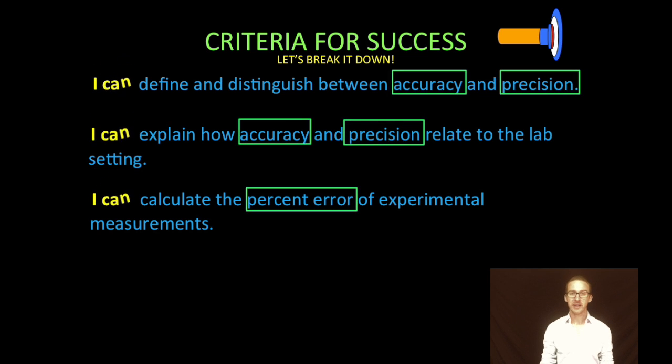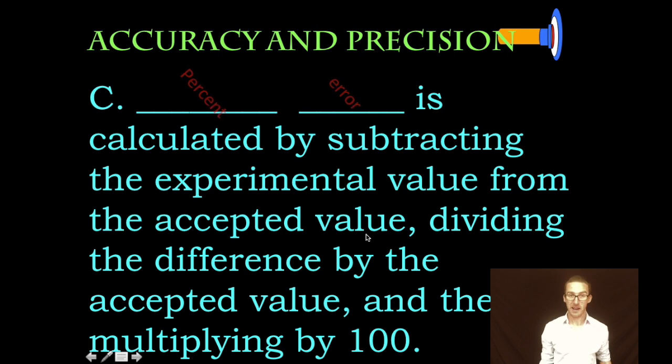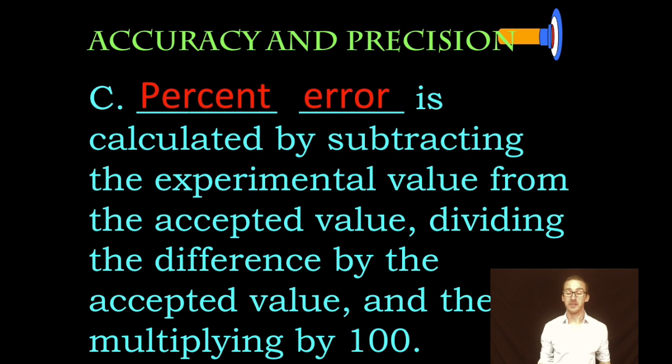And how we can calculate that and what that means in relationship to accuracy and precision. Okay, so first of all, what in the heck is percent error? It is a formula that we use that is calculated by subtracting the experimental value, or what we get in the lab, from the accepted value, which we would use a reference or textbook for.